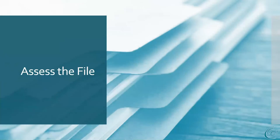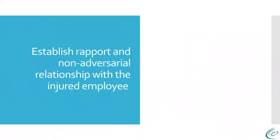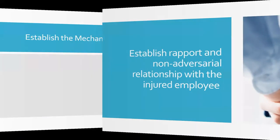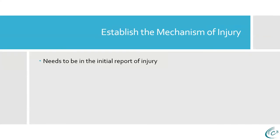COVID aside, let's assess the file. You want to establish rapport and a non-adversarial relationship with the injured employee. I'm looking forward to the day when I can shake people's hands — bumping elbows just doesn't have the same gravitas. Establish the mechanism of injury. This needs to be in the initial report of injury as submitted by the injured employee and the employer. How did this specific injury occur? A woman in the third seat of a passenger van who stopped suddenly, and she reportedly went from the third seat all the way to the dashboard.